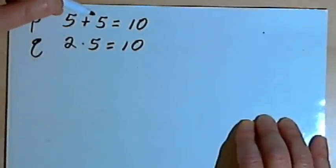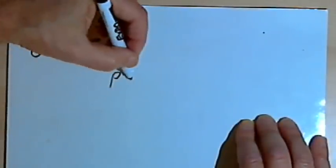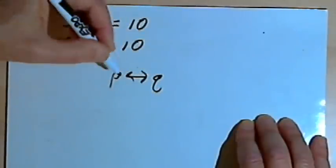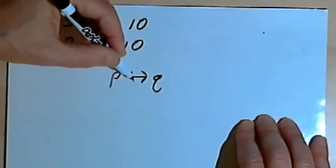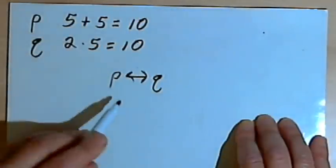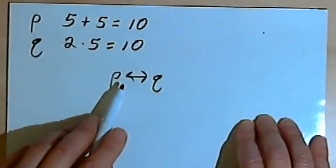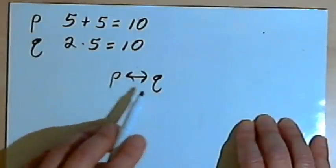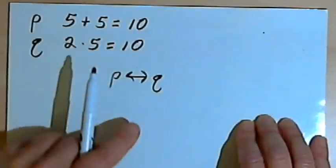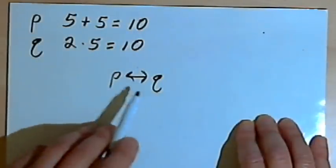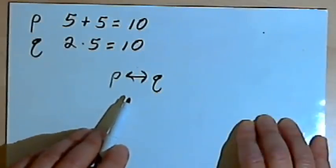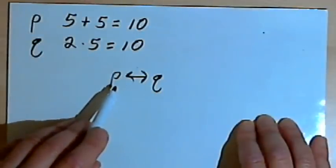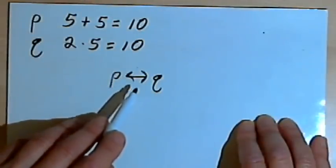To write a biconditional symbolically, I use a P, a two-headed arrow, and then Q — the arrow points in both directions, to both P and Q. This represents two regular conditional statements combined together, one in each order. When read aloud, it's usually stated as 'P if and only if Q.'